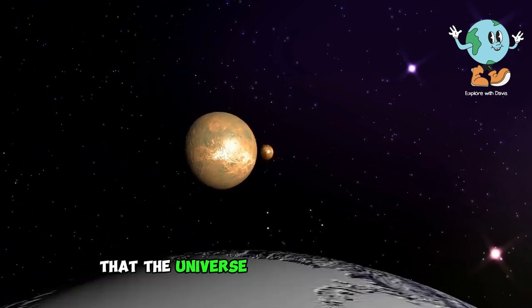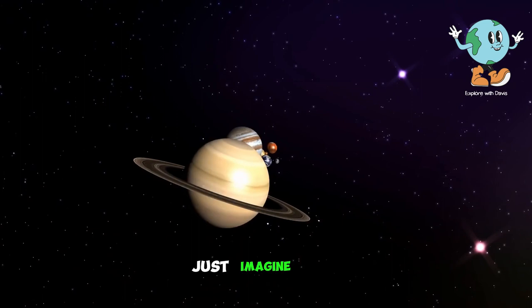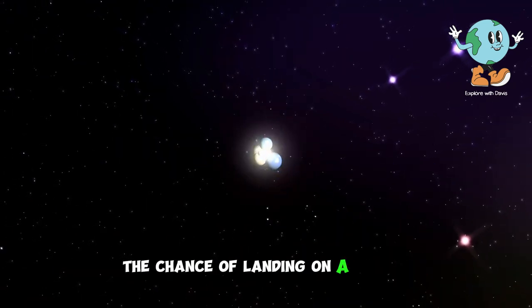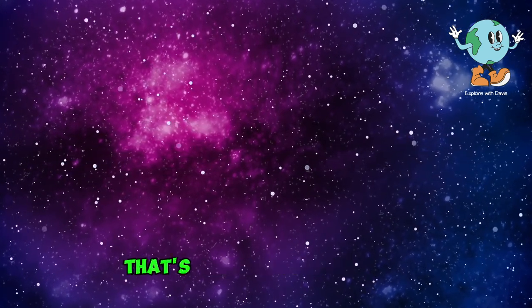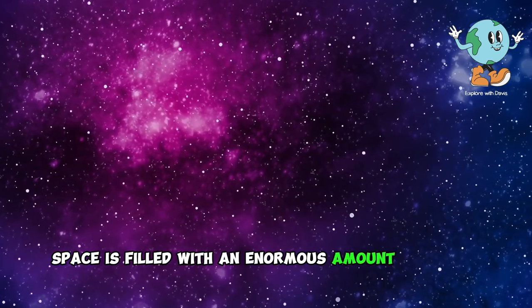However, it's important to note that the universe is vast and expansive. Our solar system is a very small part of it. Scientists say if we entered the universe randomly, the chance of landing on a planet or even being close to one is 1 in a billion trillion trillion. That's 1 followed by 33 zeros. Space is filled with an enormous amount of empty space.